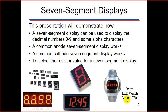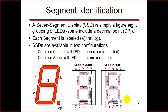A seven segment display — sometimes abbreviated as SSD — is simply a figure-eight arrangement of LED segments, some including a decimal point. Each segment is labeled a through g. Looking at the segments: a, b, c, d, e, f, g. Some seven segment displays also have a decimal point (DP).